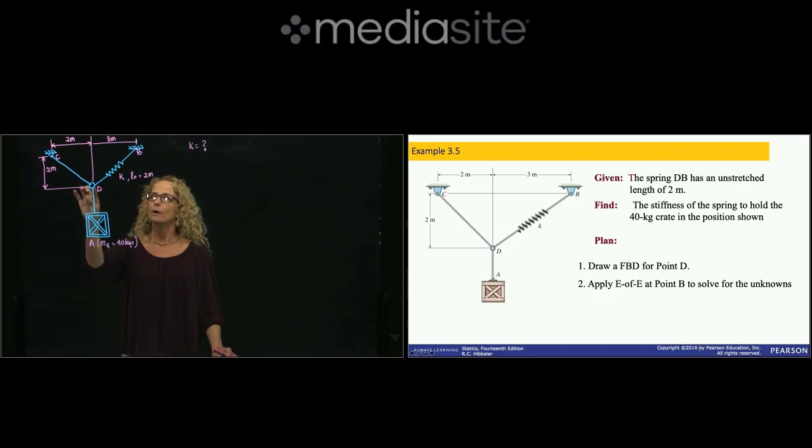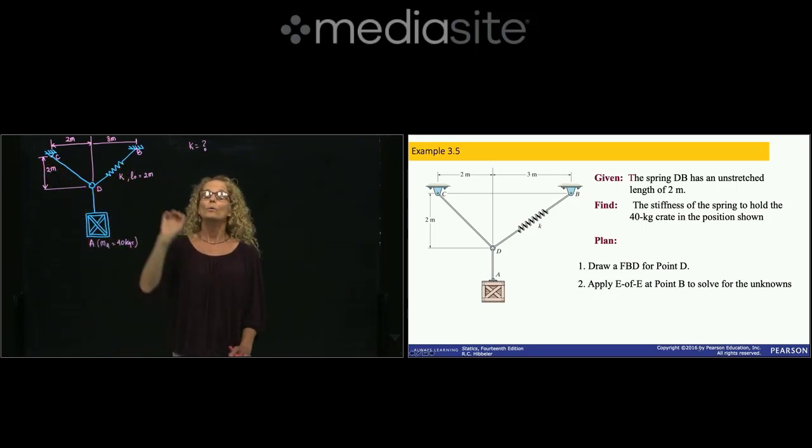The system is one joint that holds a weight with a mass of 40 kilograms. Remember that when we have a mass, we have to multiply by gravity to get the weight. We have a cord between point D and point C, and then we have a spring.